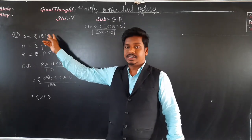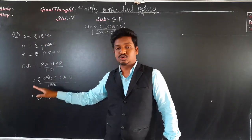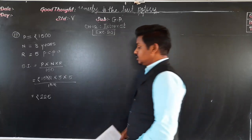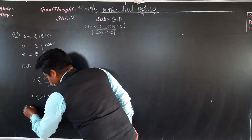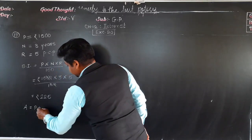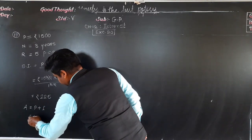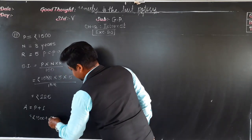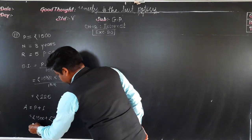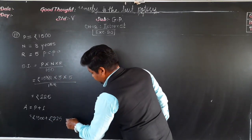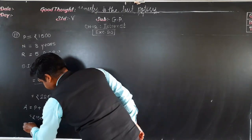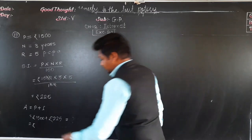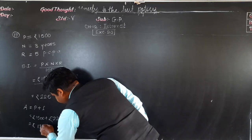On rupees 1500 after 3 years at 5% rate, the interest will be rupees 225. The amount which we have to pay is principal plus interest: rupees 1500 plus 225. The total amount to be paid is rupees 1725.